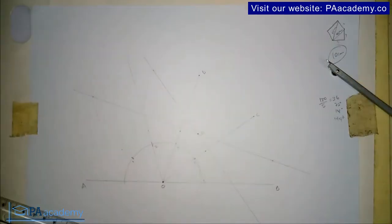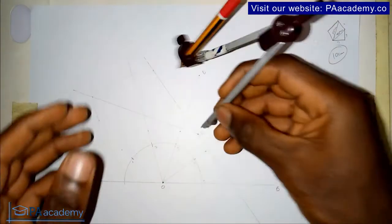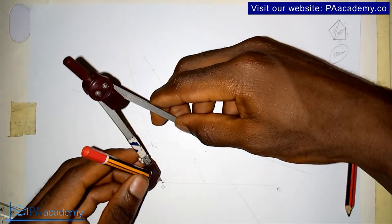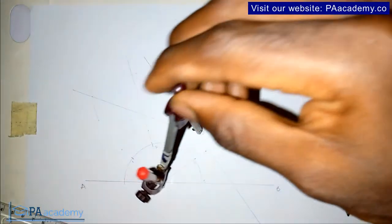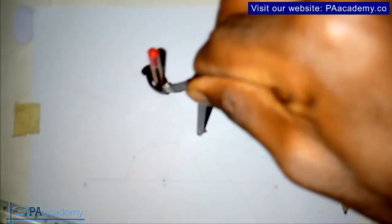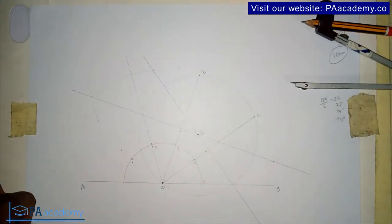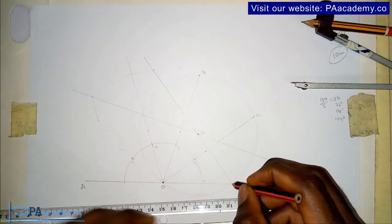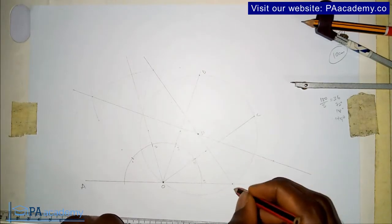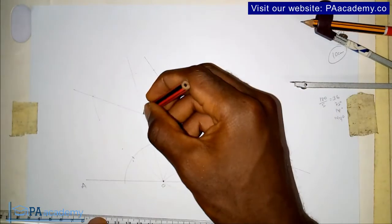This point E represents the center of the polygon that we are going to be constructing. So what you do is you pick your compass and place it from point E to point O, then draw a circle. So here I have my circle. Now this circle that we've just drawn is touching line AB — it's touching it at this point. Let's call this point F. And it's also touching the line that passed through point 2 — let's call that point G.